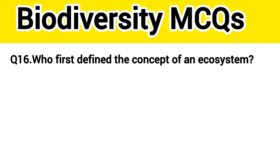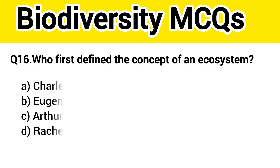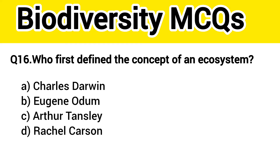Question number 17. Who first defined the concept of ecosystem? The right answer, option C: Arthur Tansley.